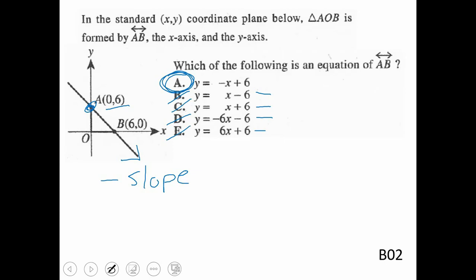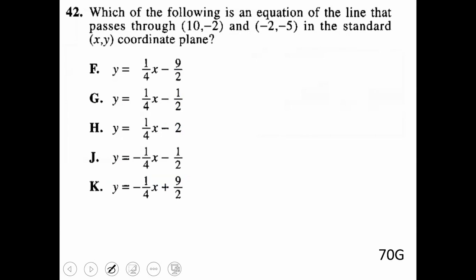Kind of a variation of that question wants to know which of the following is the equation of the line that passes through these two points in the standard coordinate plane. So a few different options on this. We can see that F, G, and H all have the same slope. J and K have the same slope. We talked last lesson about finding a slope. I would probably start there. So if I set this up and do y minus y, so negative 2 minus a negative 5 over x minus x, so 10 minus a negative 2.